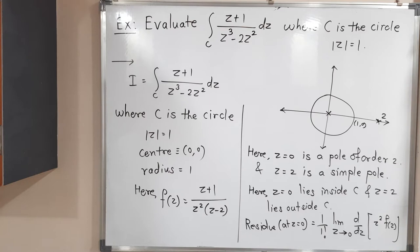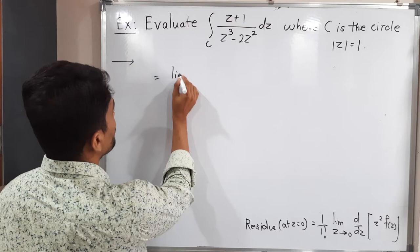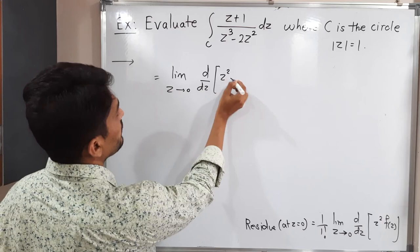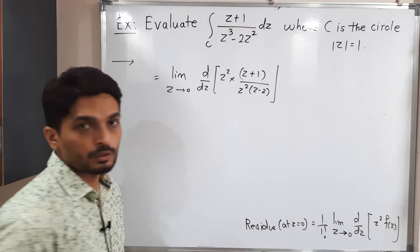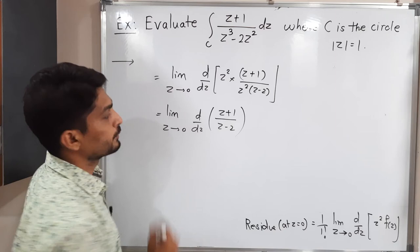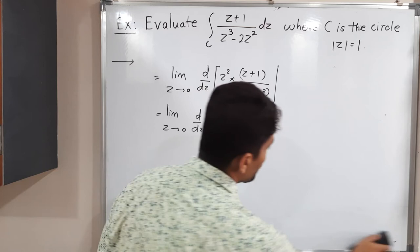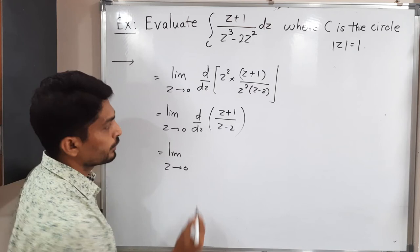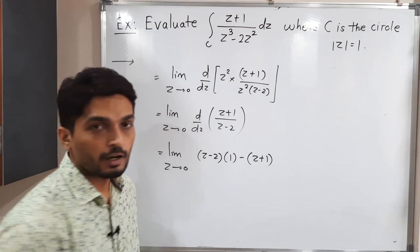Simplifying further: Z² · F(Z) = Z² · (Z+1)/(Z²(Z−2)), so the Z² cancels, leaving the limit as Z→0 of the derivative of (Z+1)/(Z−2). We apply the quotient (U/V) rule: the derivative is [(Z−2)·(1) − (Z+1)·(1)] / (Z−2)², which gives limit as Z→0 of [(Z−2) − (Z+1)] / (Z−2)².